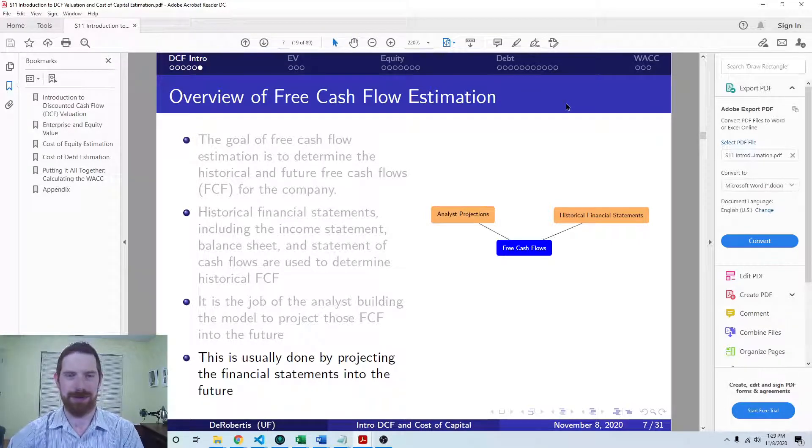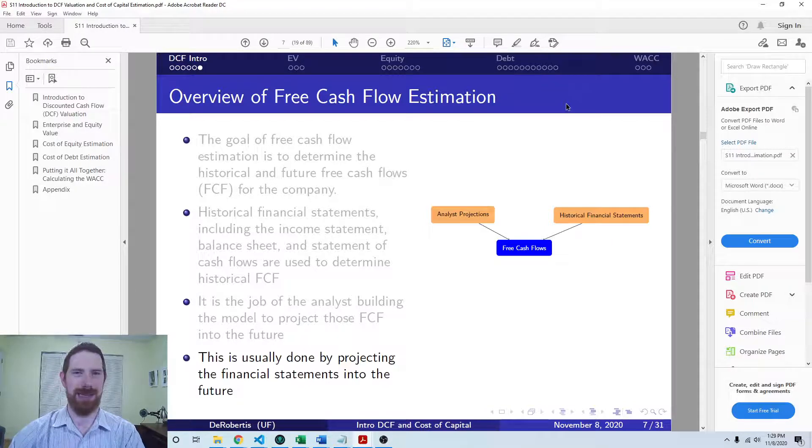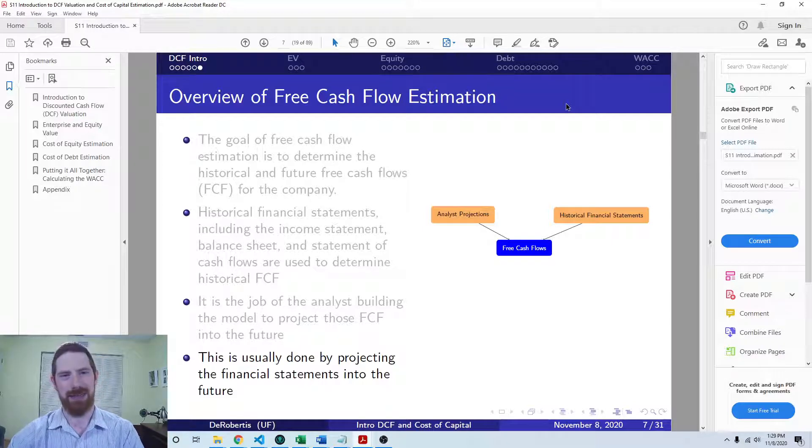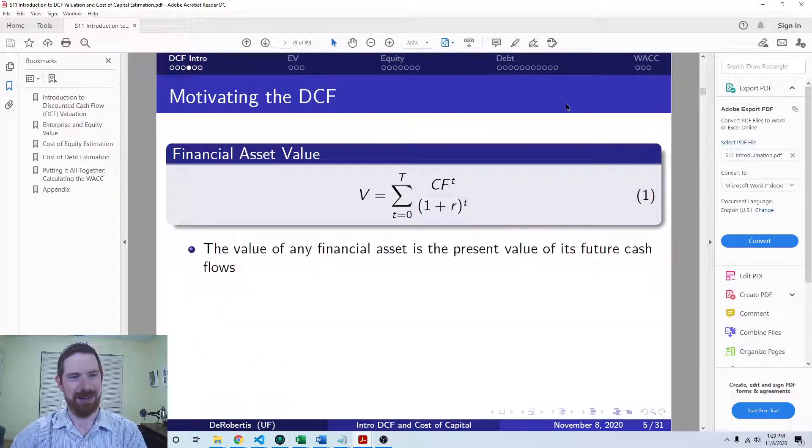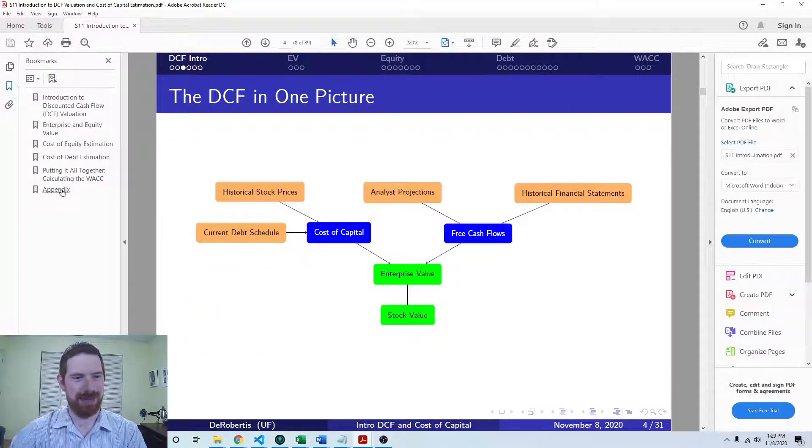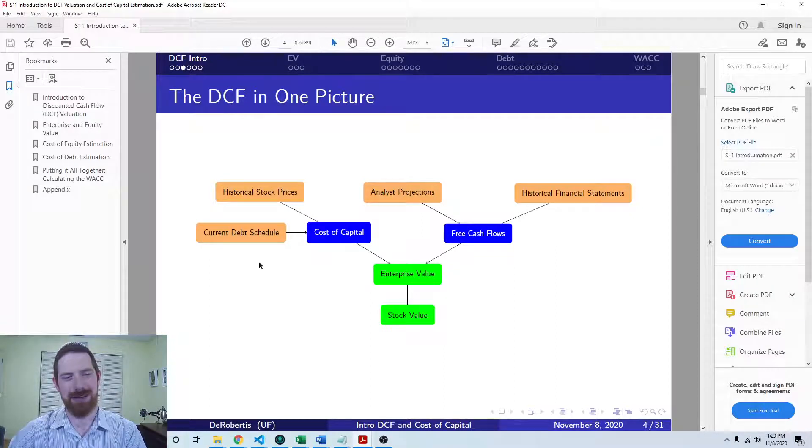And then for the rest of this lecture series, we're going to focus on digging into this WACC and how we can estimate the cost and market values of equity and debt and put that together into the WACC. We're also going to look at this remaining enterprise and stock value portion of the model and see what we need to do there as well. So thanks for listening, and see you next time.